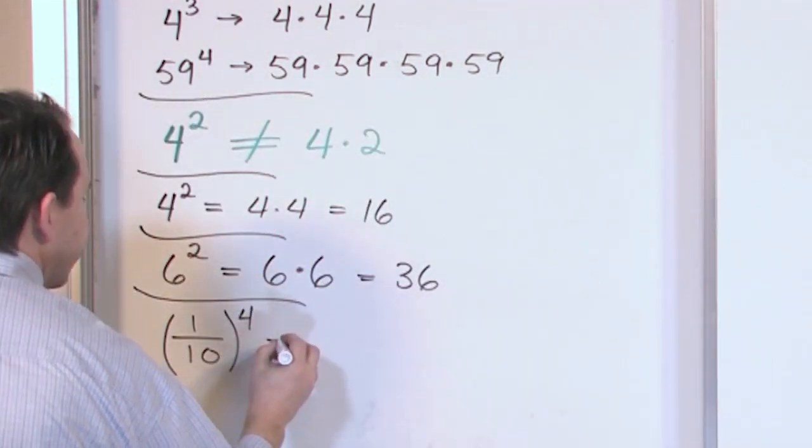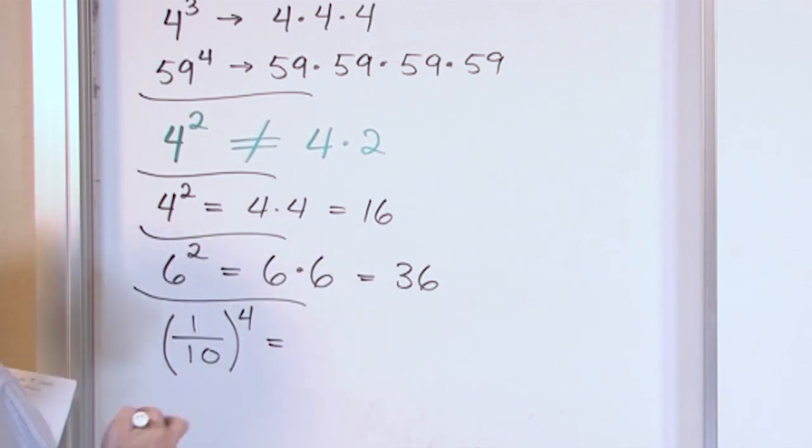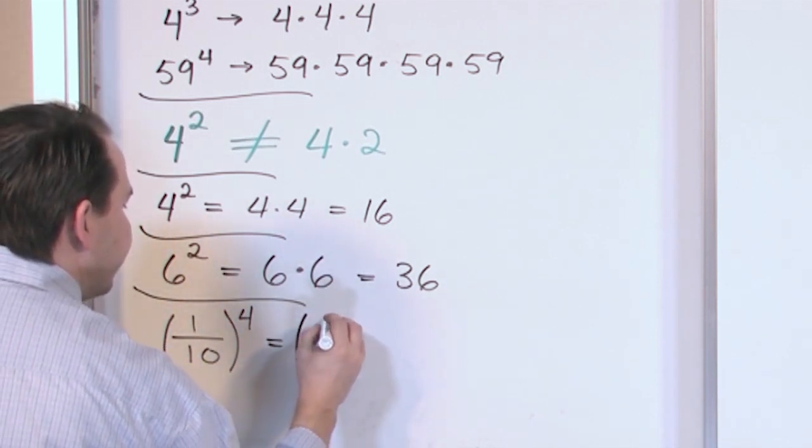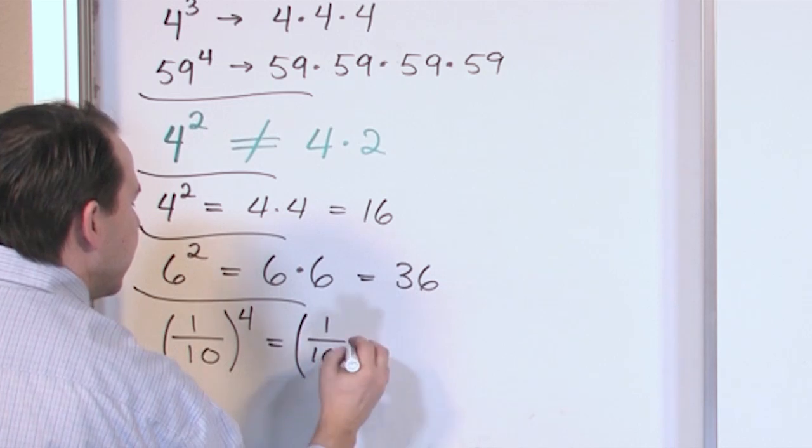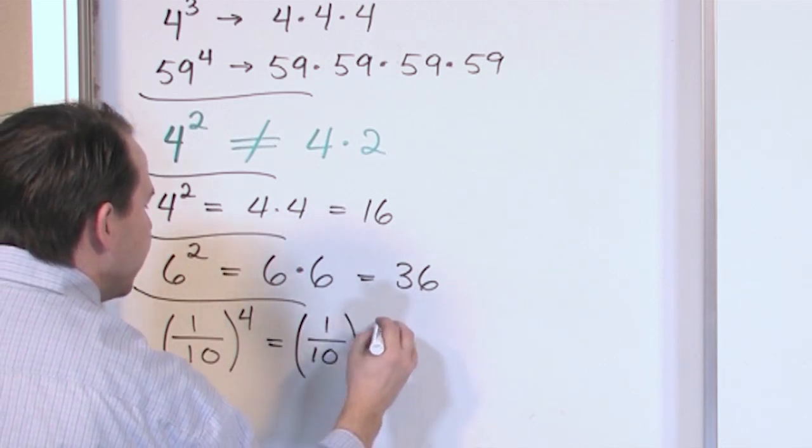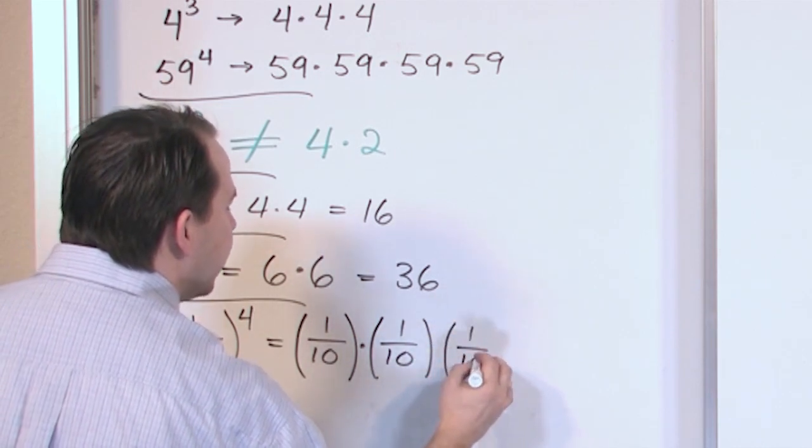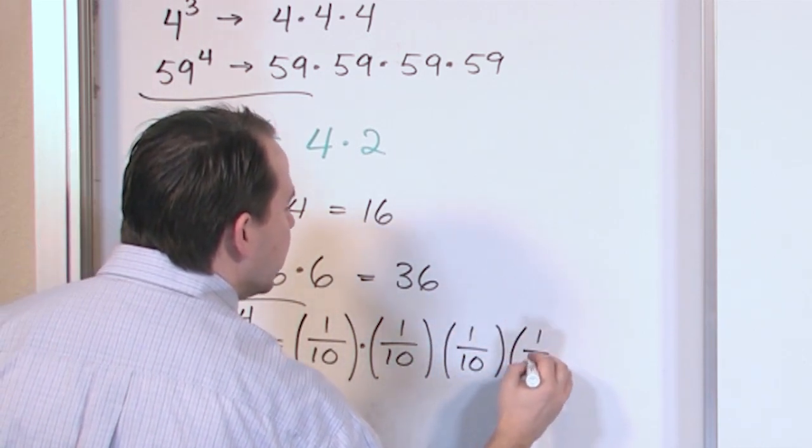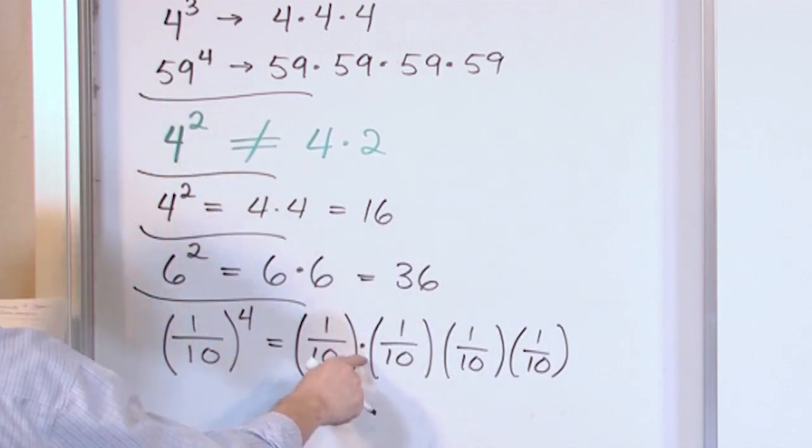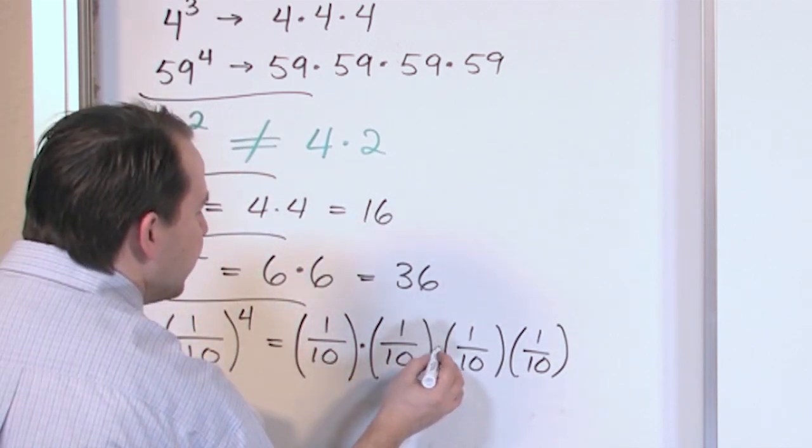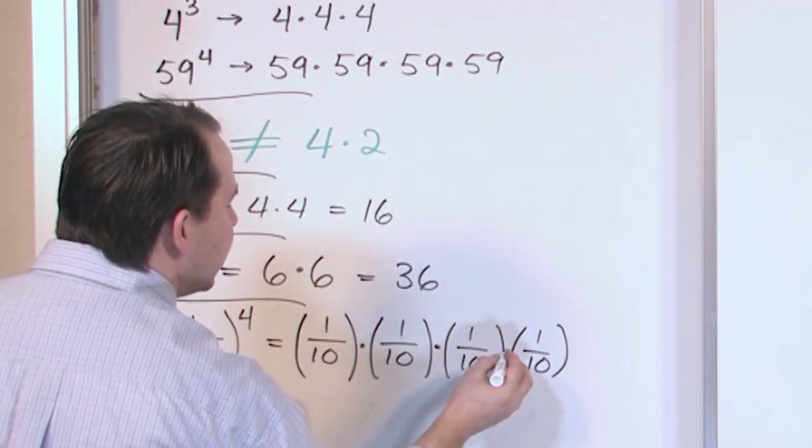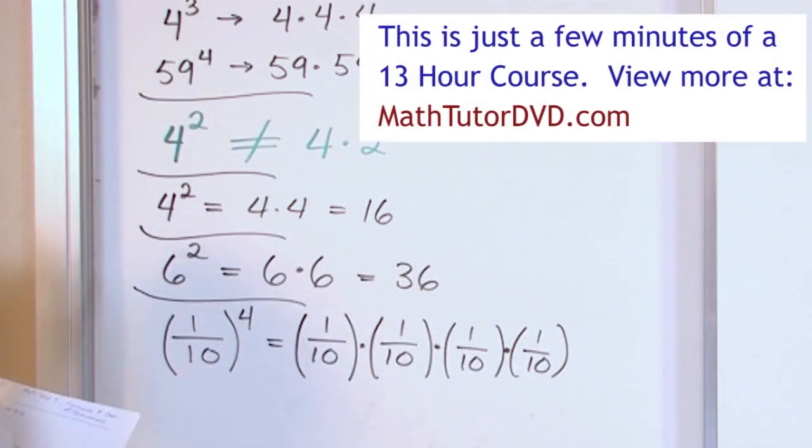So in this case, what this is going to be is to use parentheses again to get you familiar with it. One-tenth multiply by one-tenth multiply by one-tenth multiply by one-tenth. Now I'm putting a dot in here, but really, when you put parentheses right next to each other like that, it means multiplication. But for now, I'll just keep putting the dots.